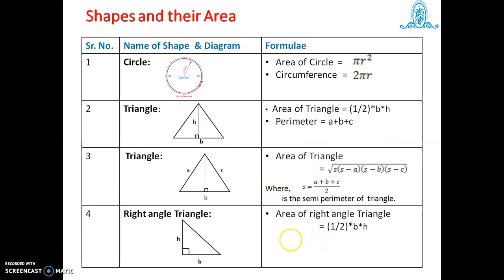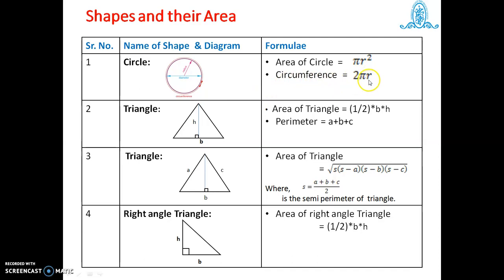In this chart, we write the area of the figures. Starting with the first one — circle. Area of circle is equal to pi r squared, where r is the radius. The diameter is twice the radius, and the circumference is 2 pi r, where r is the radius and 2 pi represents one complete rotation.